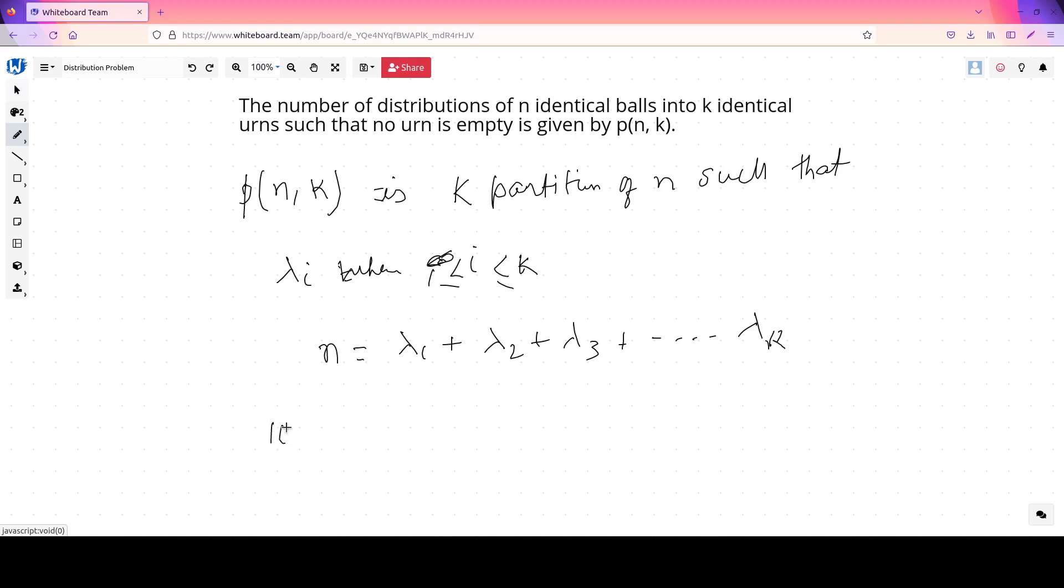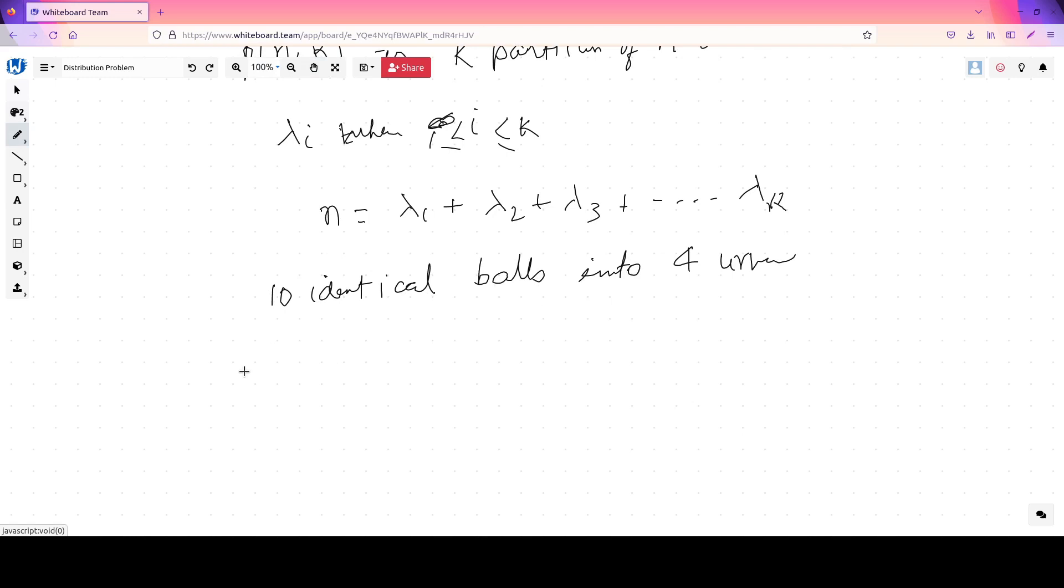So let's try to write an example. Let's try to divide 10 identical balls into 4 urns. Since ordering is not important and each urn should have at least one, we will divide it in this fashion. So 4 urns, first we get 1,1,1,7. There is no ordering required for urns or the balls because both are identical. Then 1,1,2,6. Then 1,1,3,5. Then 1,1,4,4. So we get 10 here. There are four ways.